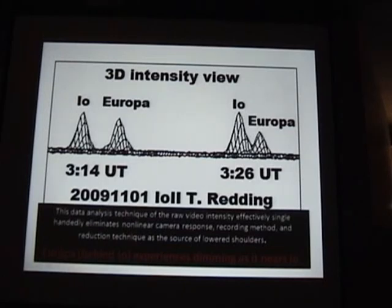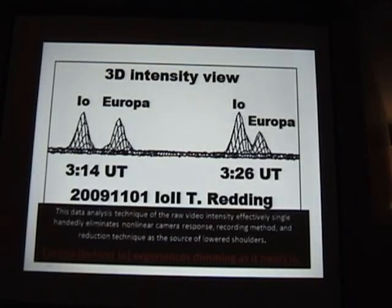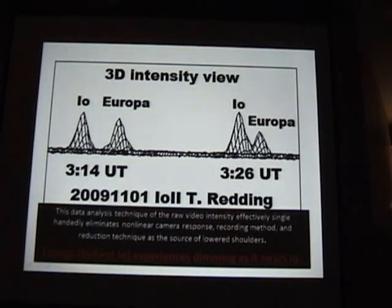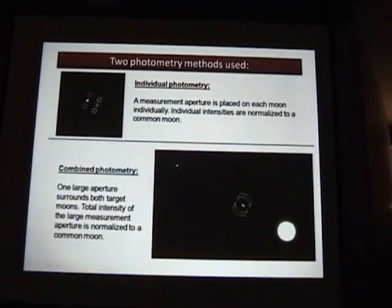This single method of viewing our intensities gave me the entire answer. IO was in front of Europa — here it is at two different times, 314 and 326 for this particular event — and you notice Europa dimmed relative to IO. So the object that was behind was indeed the source of the dimming. This is the raw view, so it removes reduction method and removes the camera, because there's no way the camera can respond to one moon and not the other equally. We found it confirmed in about eight different independent methods.